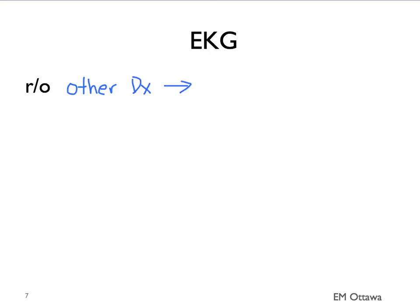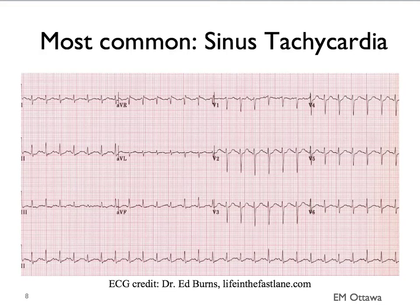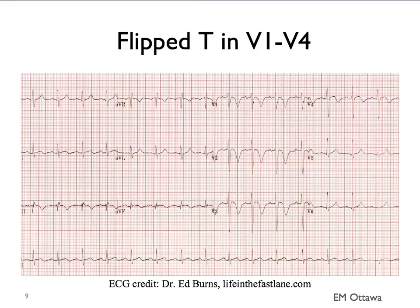Next, we'll talk about EKG. The EKG serves two purposes: one, to rule out other diseases. What other diagnoses can be helped by doing EKG? It includes ST elevation MI and pericarditis, that can give patients shortness of breath and chest pain. There are also other clues on EKG that point to the patient having a PE. Most commonly seen EKG finding in patients with PE is sinus tachycardia, seen in about 40% of patients. Sometimes in leads V1 to V4, you can see flipped T waves, which can happen in about a third of patients with PE.